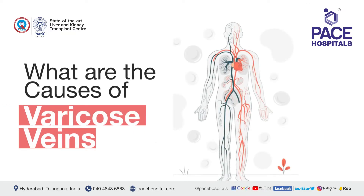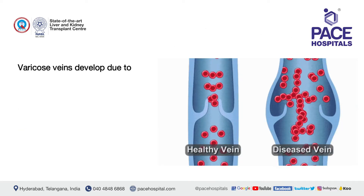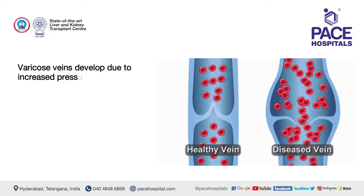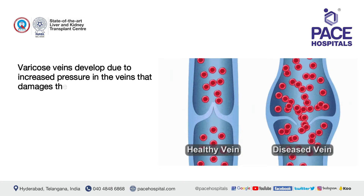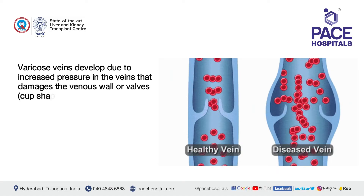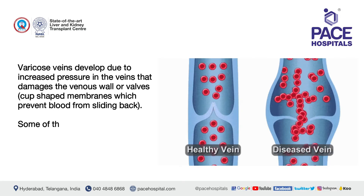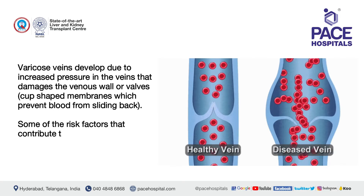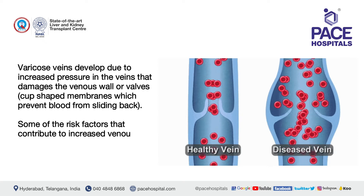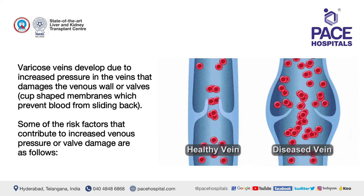What are the causes of varicose veins? Varicose veins develop due to increased pressure in the veins that damages the venous walls and valves — cup-shaped membranes which prevent blood from sliding back. Some of the risk factors that contribute to increased venous pressure or valve damage are as follows.